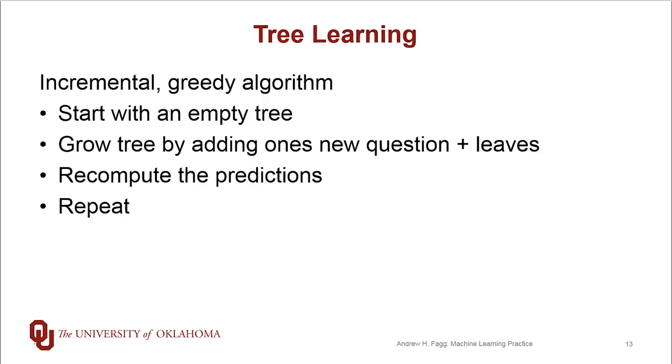Tree learning is fundamentally an incremental greedy algorithm. So we start with an empty tree, so there's a root node and one leaf, and then we gradually grow this tree by adding one new question and the appropriate leaves one at a time. By greedy what we mean is that we try to make the best choice for expanding the tree at each stage.